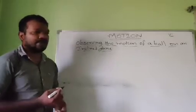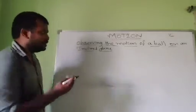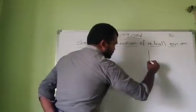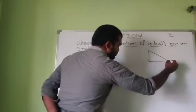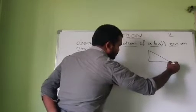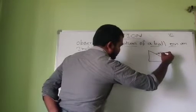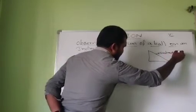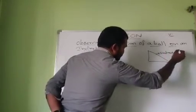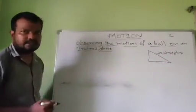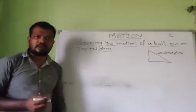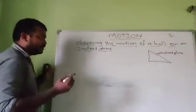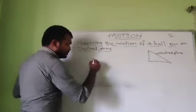First of all, we all have a doubt about what is an inclined plane. So you can see this one — the one which is having a slope is called as an inclined plane. We can take the inclined plane here.